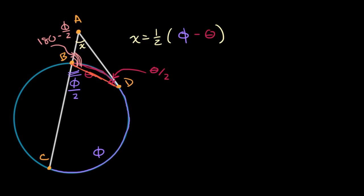So let me just write that down. I could write that x plus theta over two, theta over two plus 180 minus phi over two, 180 minus phi over two is equal to 180.